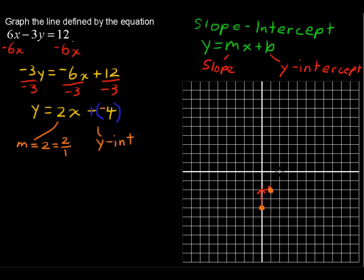And again, up 2 to the right 1, and then up 2 to the right 1, and you can just keep on going with that. You really only need two points for a line, but it's easier to graph it if you have a few points, or use a straight edge if you are doing this on paper.